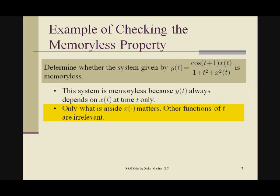Well, only what is inside x matters. The definition of the memoryless property is that the output y depends on the input x—keywords: input x—only at time t. If there are other functions of t flying around, that has nothing to do with whether the system is memoryless or not. So even though there is a cosine(t+1) here, the system is memoryless.